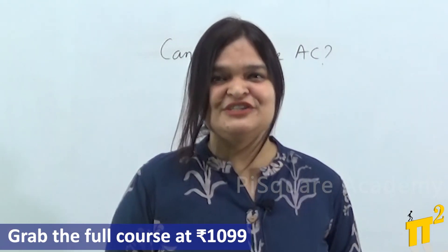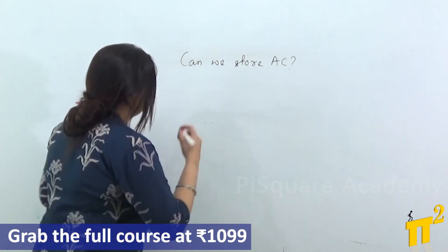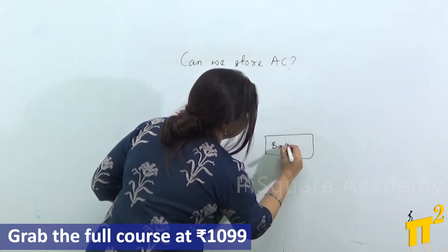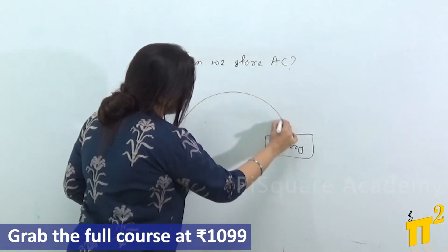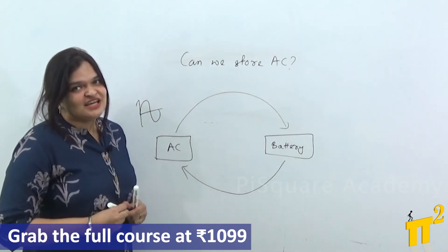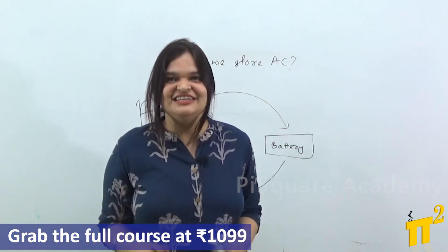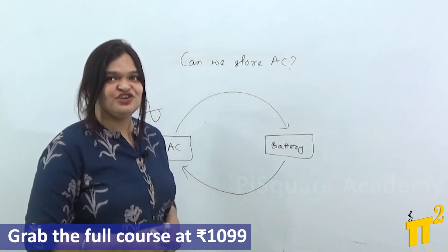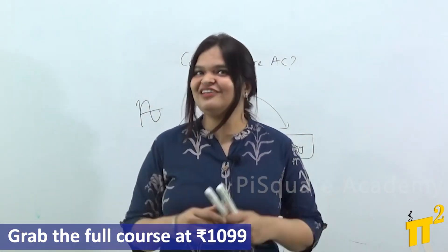Getting back to the topic: suppose here is the AC and here is the battery. AC has both a positive and a negative half cycle, where it gets stored or charges in the positive half cycle and discharges in the negative half cycle. Since this charging and discharging cancel each other out, we cannot store AC in this way.